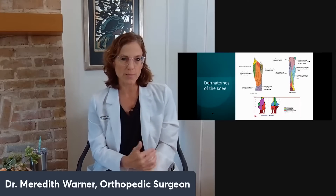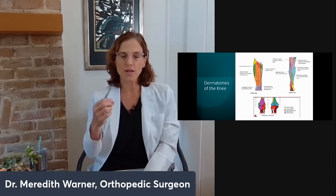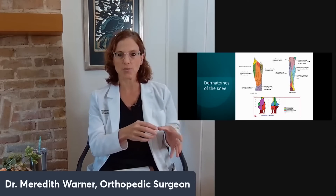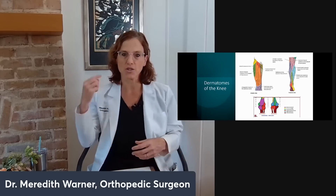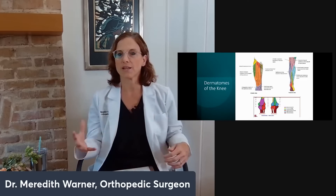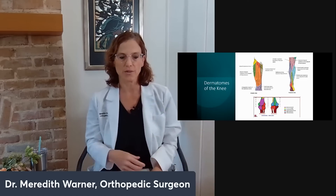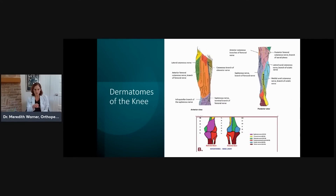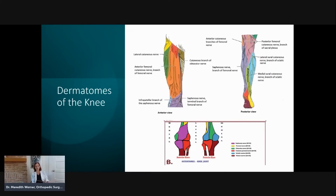Dermatomes — each nerve that comes out of the spinal cord is responsible for a certain area of the body in terms of sensory input. Your L1, L2, L3, L4, L5 nerve roots all contribute to the knee. Looking at the anterior knee, the medial inside part is the saphenous nerve. If you flip around to the back of the knee, the back part of the inside is the tibial nerve. So every time somebody comes in with knee pain, I'm thinking about not just the anatomic structures but what innervates them.